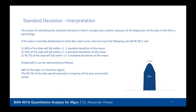Looking more closely at interpreting the standard deviation using a normal distribution chart: 68% of the data will fall within plus or minus one standard deviation of the mean. The normal distribution's bell curve has the special property that data clusters around the mean. So if you calculate your standard deviation and go plus or minus that value from the mean, 68% of the data will lie within that range. For example, if the mean is 28.6 and the standard deviation is 2, the range would be 26.6 to 30.6.